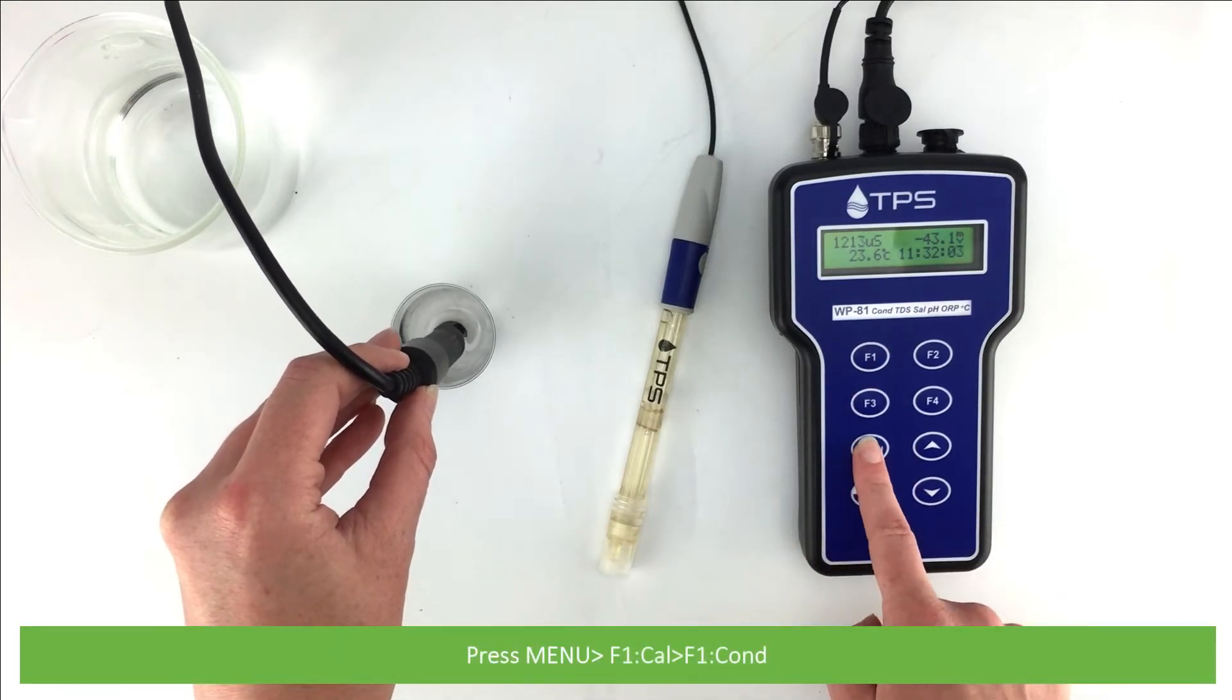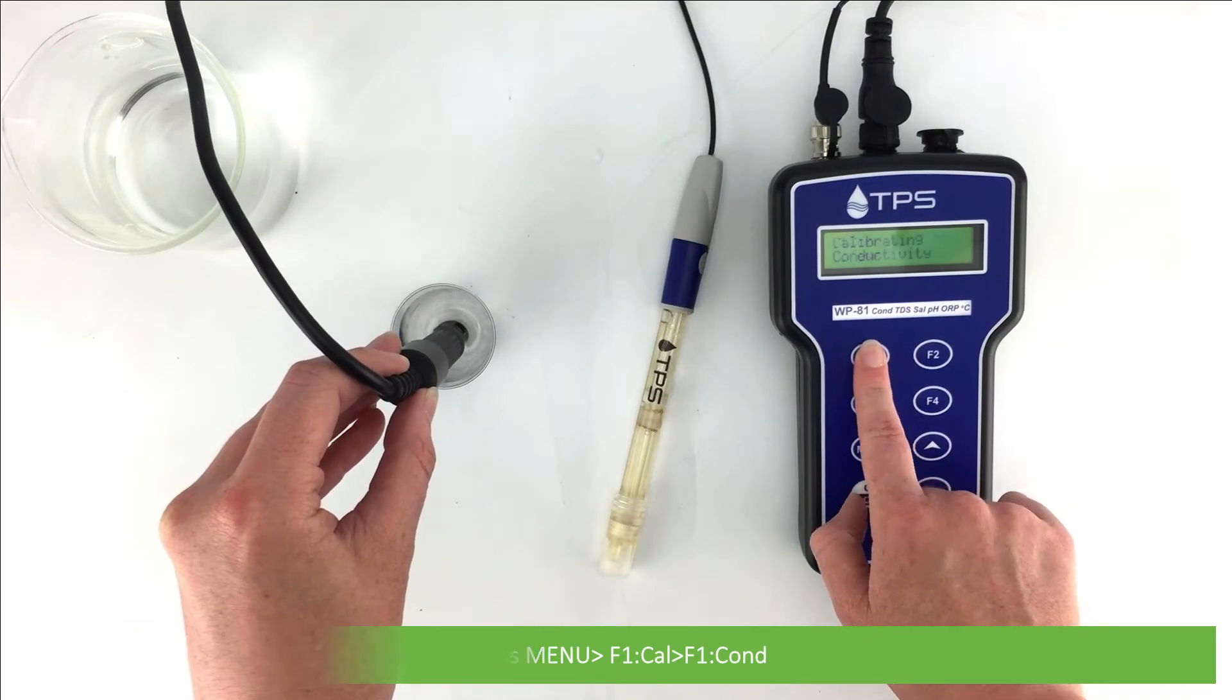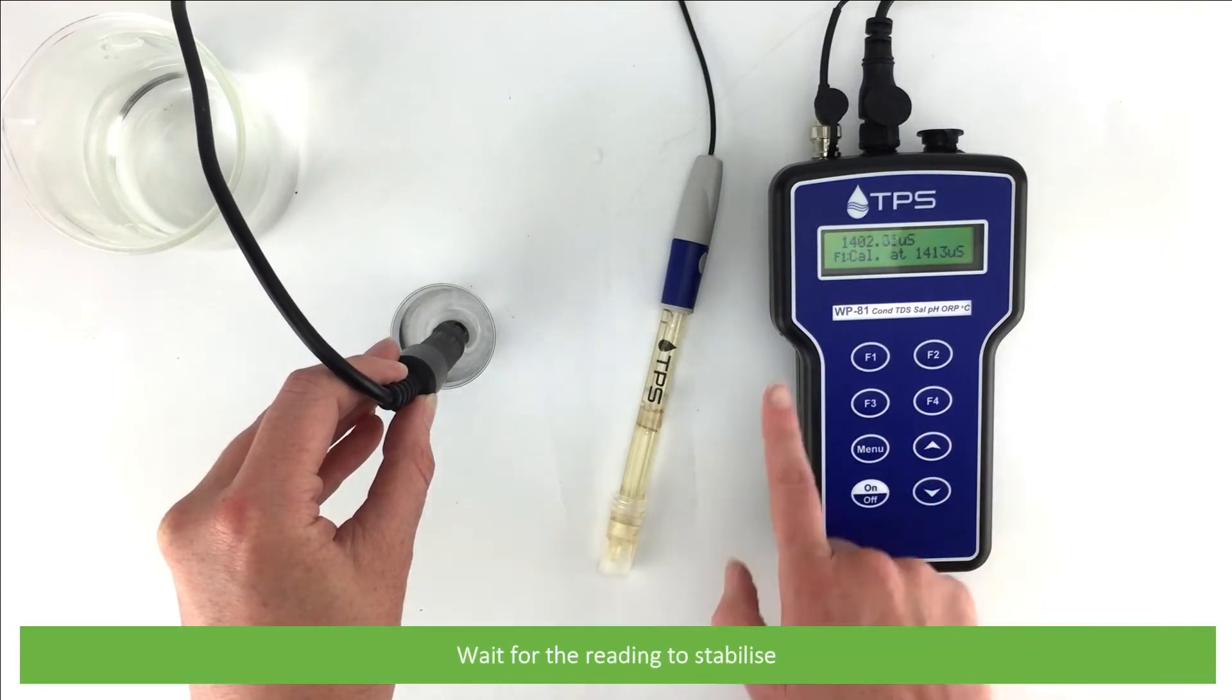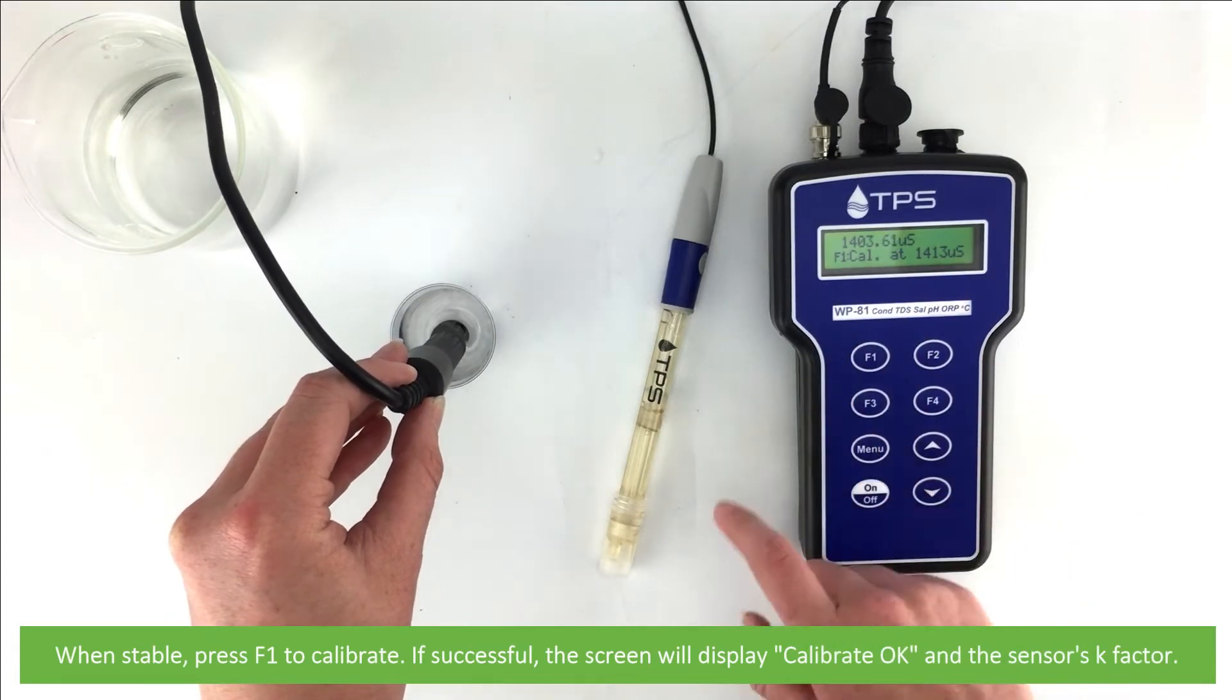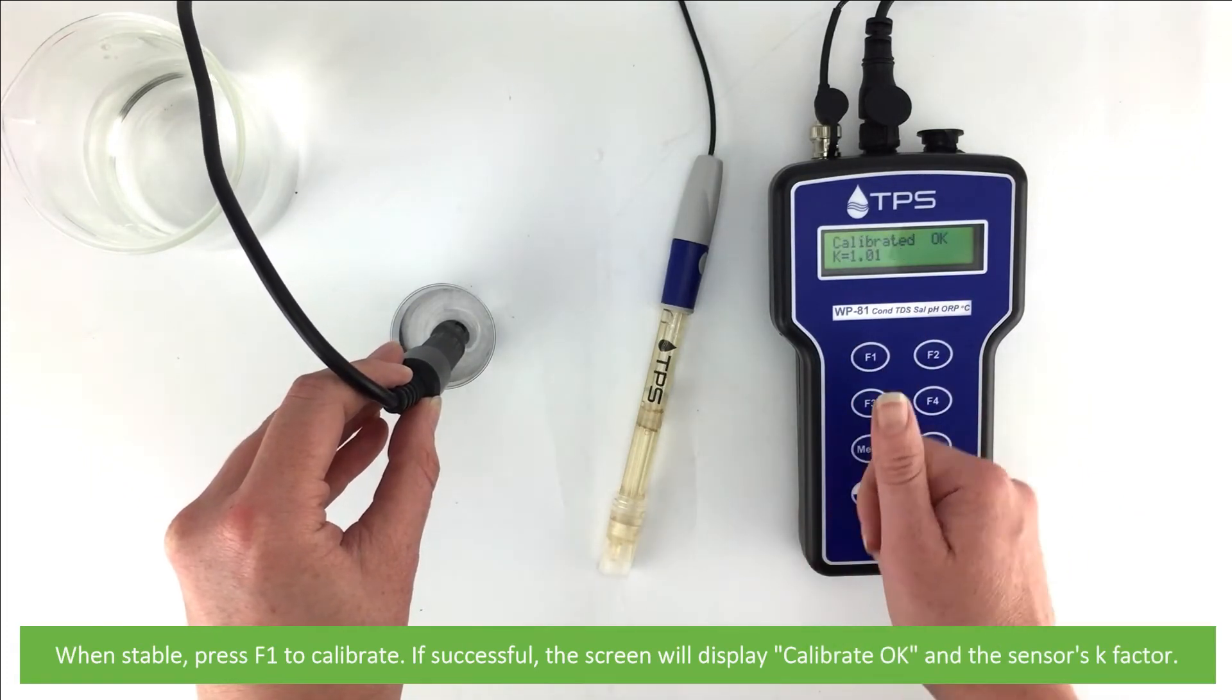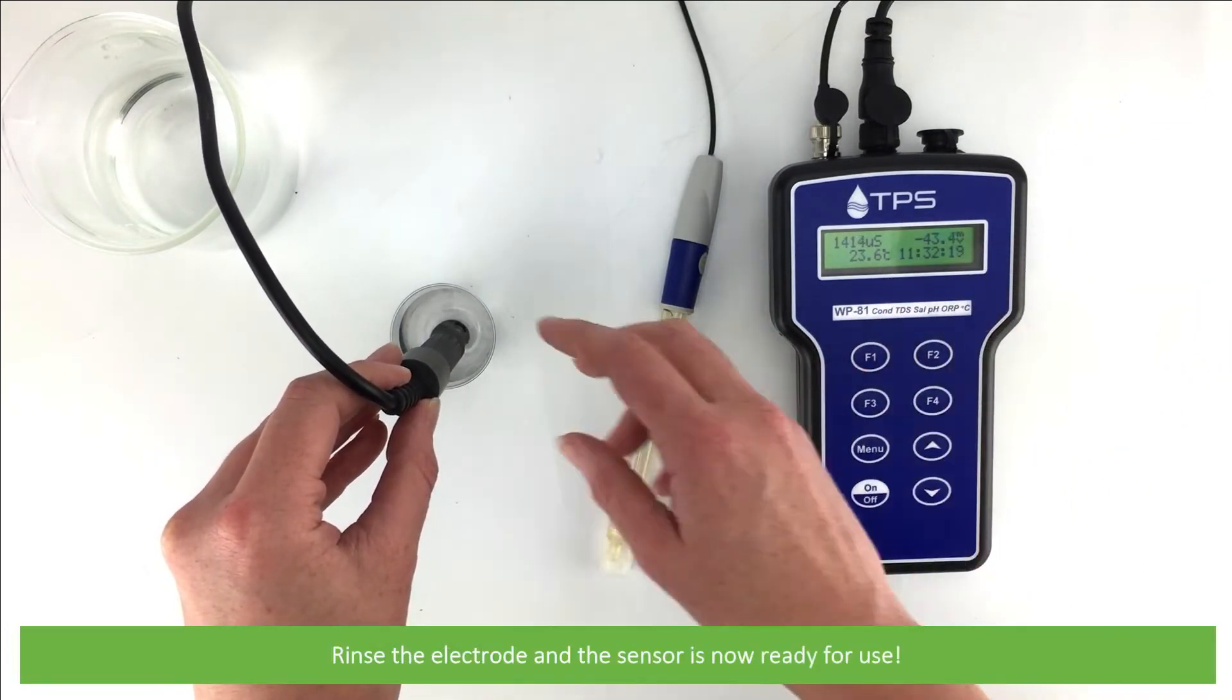Then press menu, F1 cal, F1 conductivity. Wait for the reading to stabilize. When stable, press F1 to calibrate. If this is successful, the screen will display calibrate OK and the sensor's K factor. Rinse the electrode and the sensor is now ready for use.